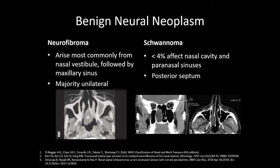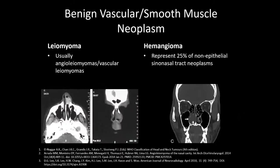Neurofibromas arise most commonly from the nasal vestibule followed by the maxillary sinus, though the sinonasal presentation is rare. Less than 4% of schwannomas affect the nasal cavity and paranasal sinus; when they occur they most likely arise on the posterior septum and are usually inhomogeneous on imaging, potentially presenting with bone erosion and symptoms as severe as Horner syndrome. Leiomyomas in this location are usually angioleiomyomas or vascular leiomyomas. The WHO groups lobular capillary hemangioma, pyogenic granuloma, capillary hemangioma, and cavernous hemangioma into the subcategory of hemangioma. Incidence peaks in adolescent males and pregnant women, neither of which applies, though hemangiomas represent 25% of non-epithelial sinonasal tract neoplasms and deserve consideration.